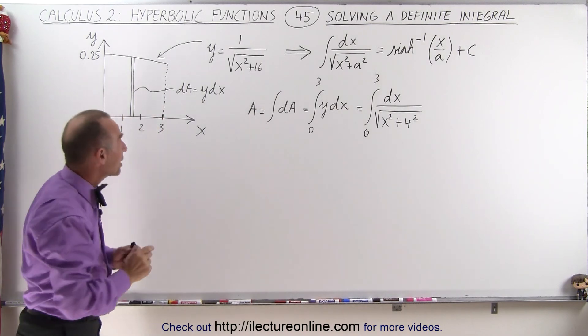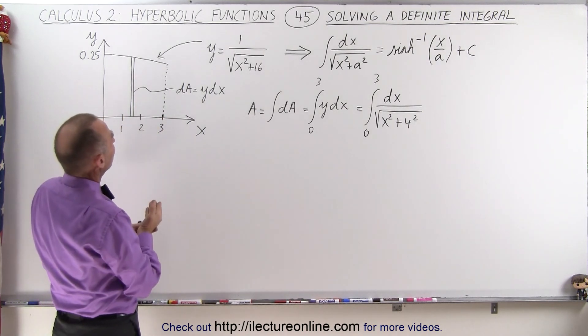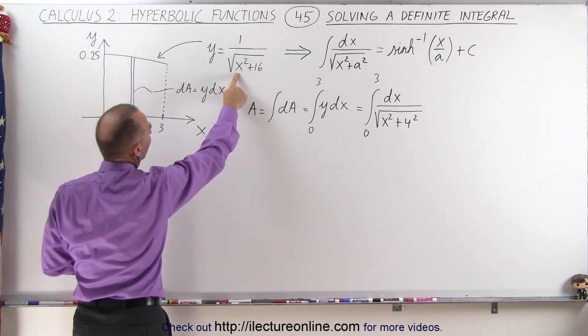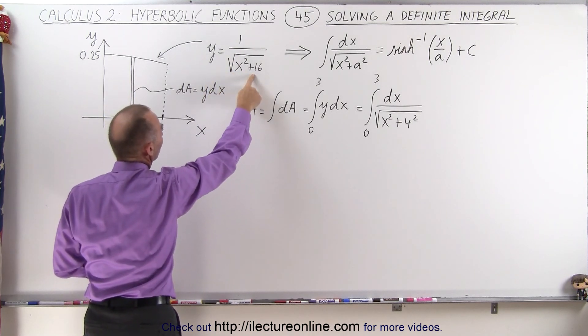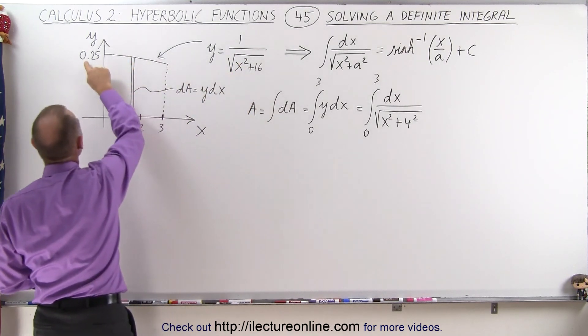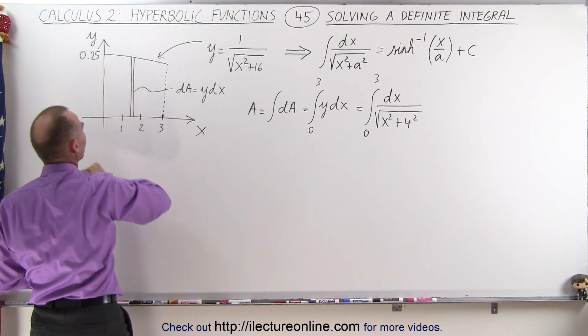So what we're going to do here, well first let's take a look at the function. When x equals 0, y is 1 over the square root of 16, which is 4. 1 quarter would be indeed 0.25 for x equals 0.